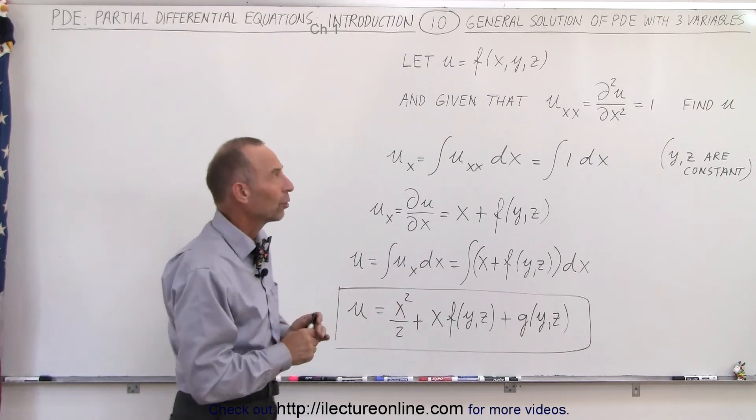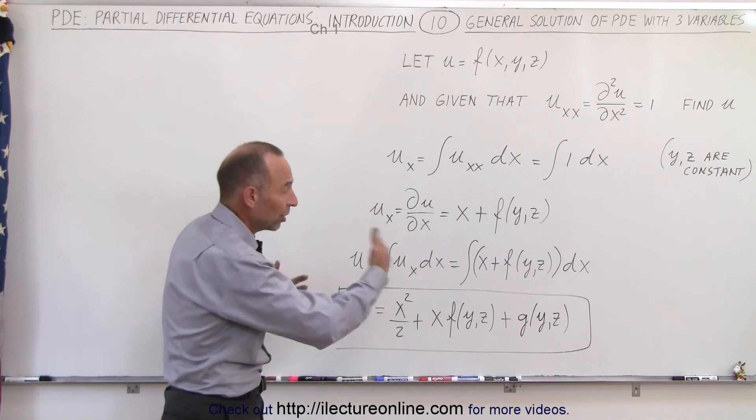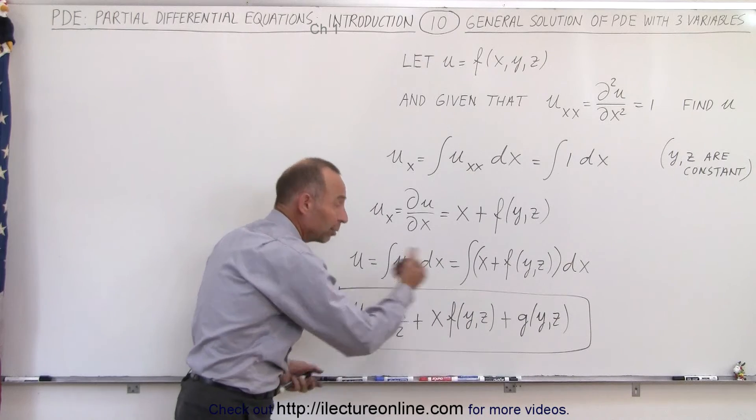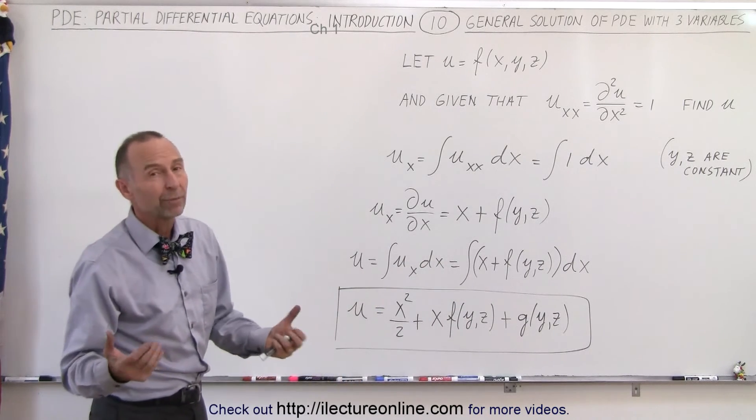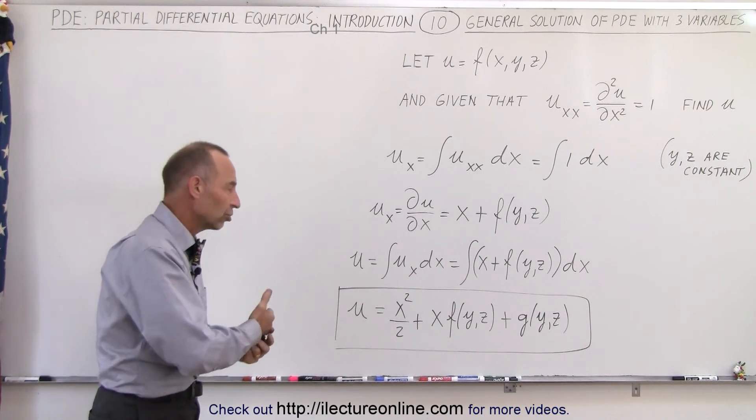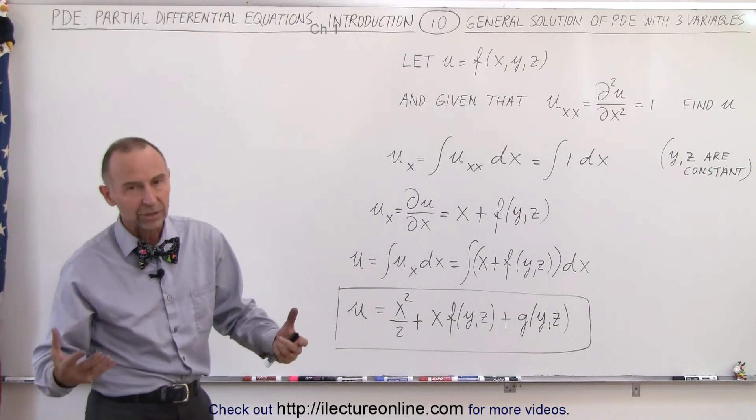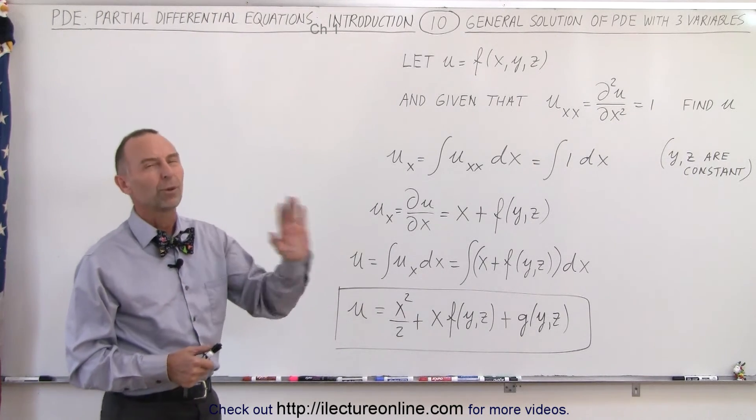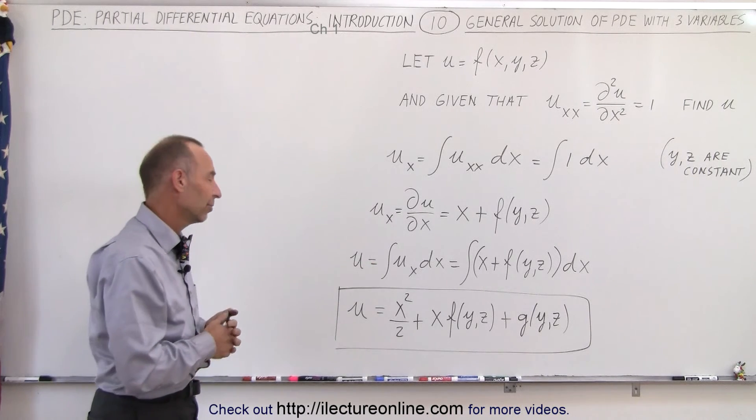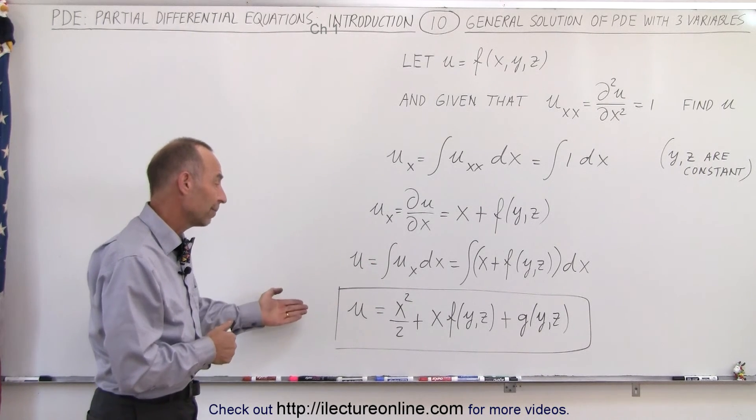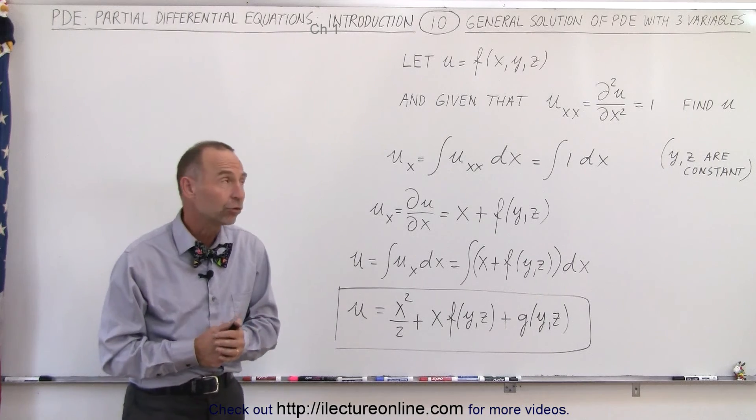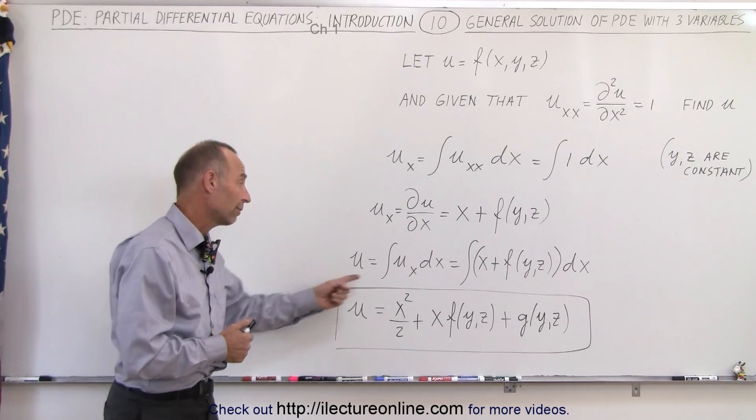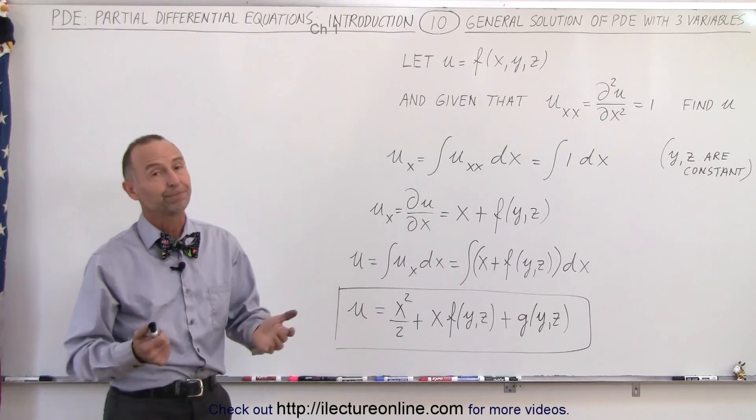That's something we're going to learn how to do later. Here we're simply looking at the general solution, and notice the general solution has a lot of complexity that needs to be solved by knowing something about the initial conditions, the final conditions, boundary conditions, whatever it is that we're solving, to get the particular solutions, but we'll do that later in some further examples. At least, there it is, there's your general solution, when we have three variables, and we have the partial derivative of one of the three variables. That's how it's done.